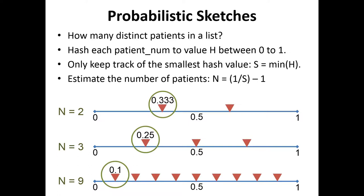Here's a quick example of what a probabilistic sketch is. A stream of data — think of it as a list of patients — and you want to know how many distinct patients are in the list. The naive way is to count each patient one at a time and have a big table storing each patient and how many times you've seen them. A much faster way: take the patient number, pass it through a random hash function, and get a value between zero and one. As you go through the list, just keep track of the smallest number you've seen. The more patients you've seen, the smaller that smallest number. For example, with two patients the smallest will map to roughly 0.33; with nine patients, roughly 0.1. There's a formula where you take one over that smallest number minus one to get an estimate for the actual answer.